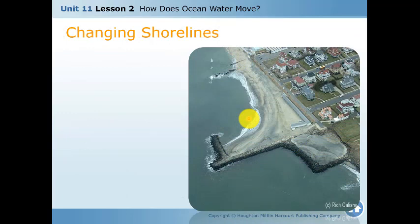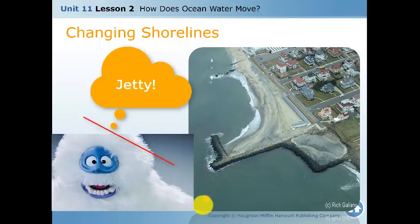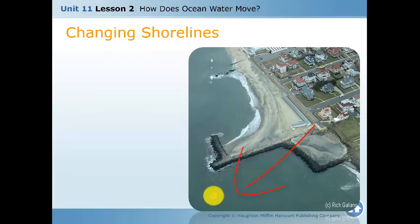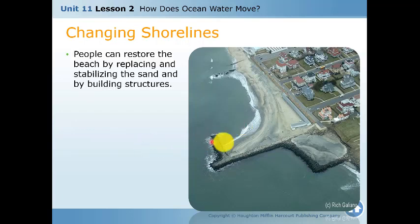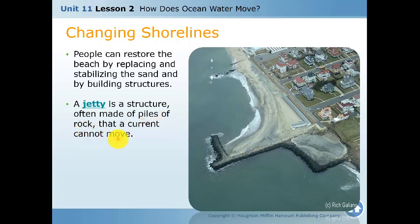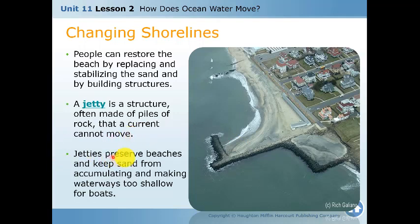Changing shorelines — people can change the shoreline using a jetty. A jetty is a pile of rocks that stabilizes the sand and prevents water from eroding or moving the sand from one place to another. People can restore beaches by building structures like jetties. A jetty is a structure often made of piles of rock, and the ocean current can move sand or destroy beaches — but jetties preserve beaches and keep sand from accumulating in waterways.